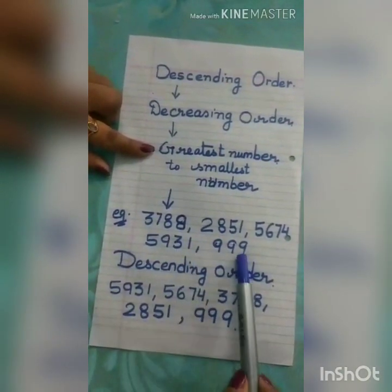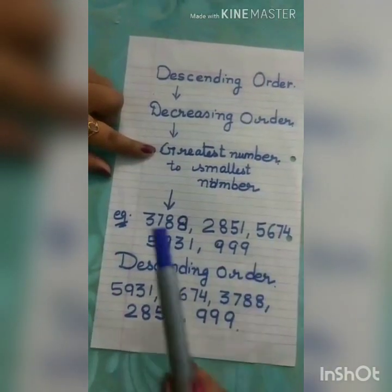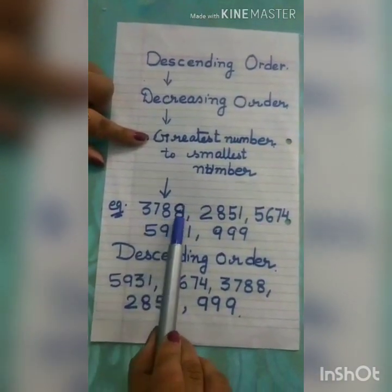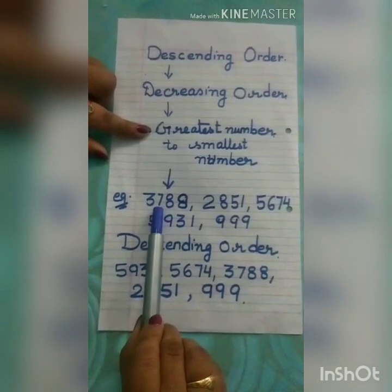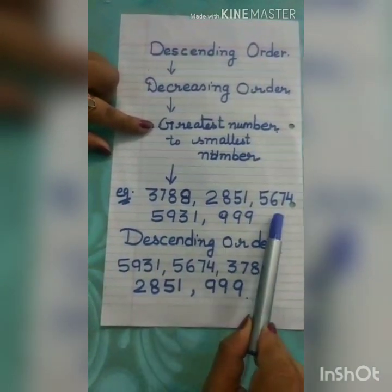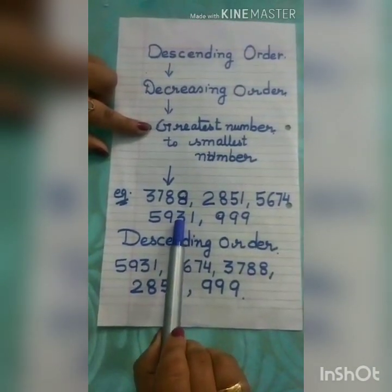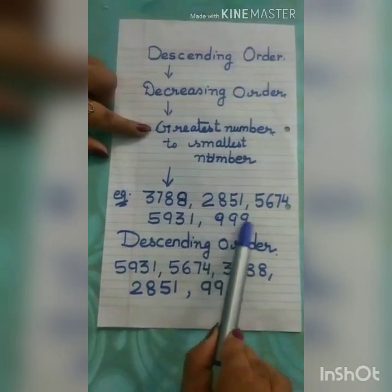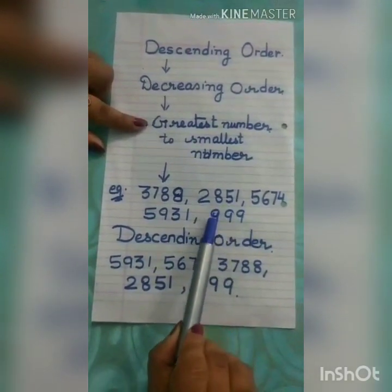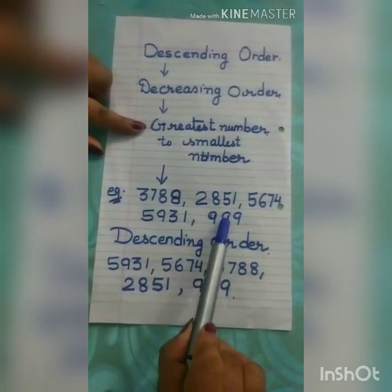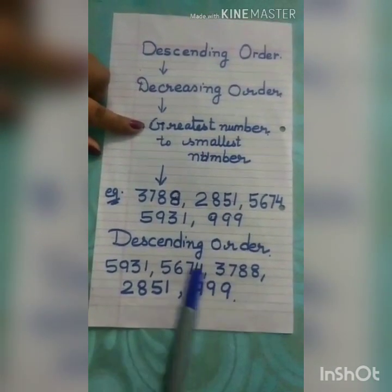Decreasing order means writing the numbers from the greatest number to the smallest number. For example, we have these numbers and follow the same rules. We count the total number of digits. All four-digit numbers have 4 digits, but one number has only 3 digits. That means the 3-digit number is our smallest number.